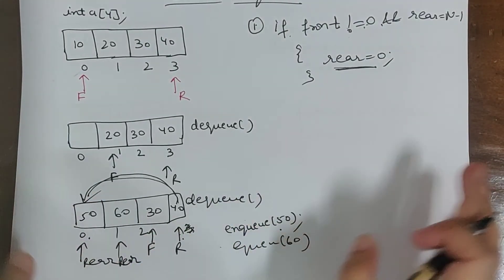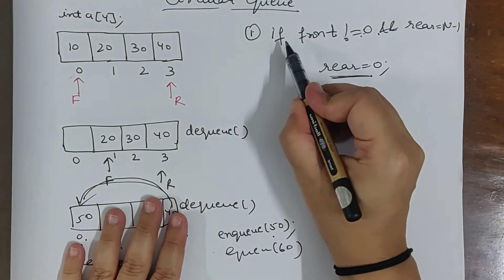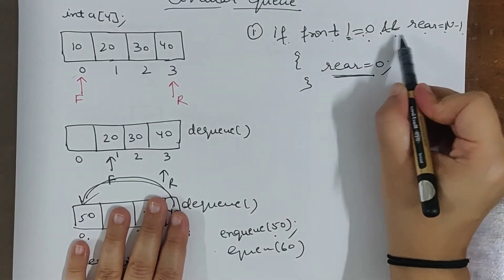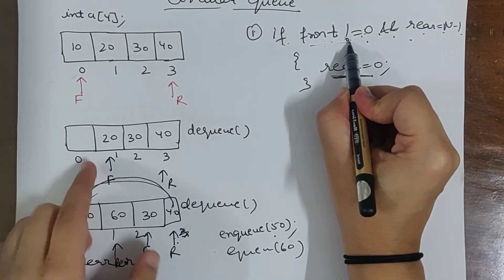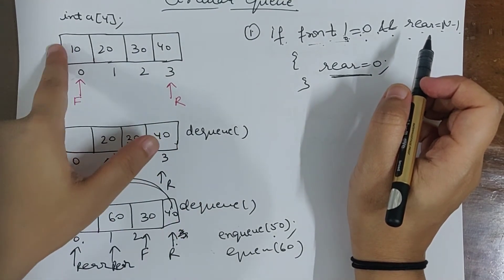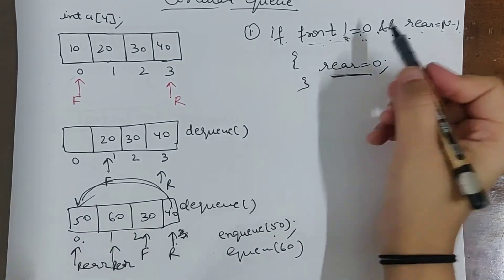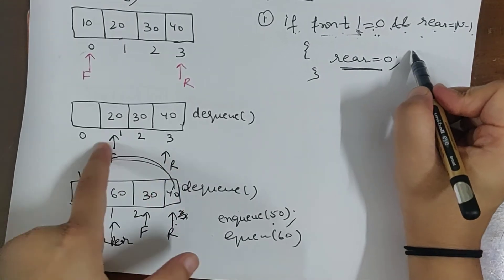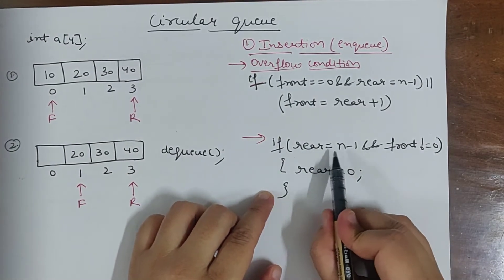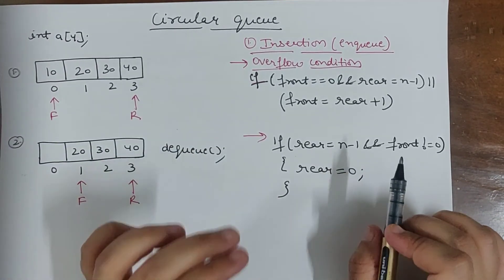So remember: the important condition in circular queue is — if front is not equal to 0 and rear is equal to n minus 1, these two conditions are true. When front is 0, it means you have not deleted anything. But as soon as you delete, front becomes front plus plus. In this case, if front is not 0 and rear has reached n minus 1, you set rear equal to 0. That is the main condition for the enqueue operation.